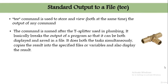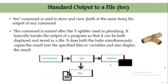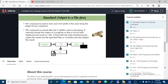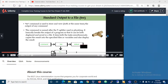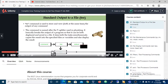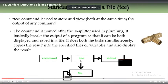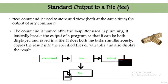Just like a plumbing T-splitter where water goes in from one side and comes out both sides, the tee command works the same way. It basically breaks the output of a program so that it can be both displayed on the screen and saved into a file simultaneously. It copies the result into a specified file and also displays the result. Whatever command you run — echo, ls, pwd — you pipe it through tee and it sends output both to the screen and to a specified file.